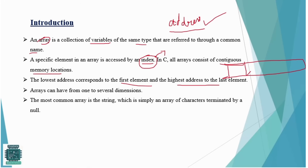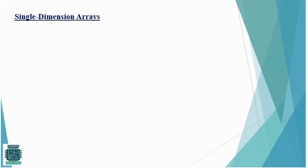The lowest address corresponds to the first element and the highest address to the last element. For example, in an array the first element will have the lowest address and the last element will have the highest address. Arrays can have several dimensions — single dimension, two dimension, or multi-dimensional array. The most common array is the string, which is simply an array of characters terminated by a null character.